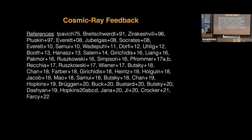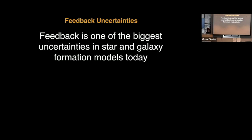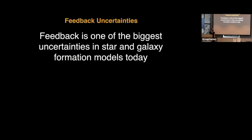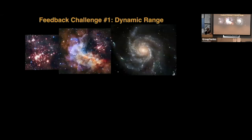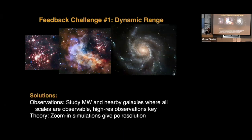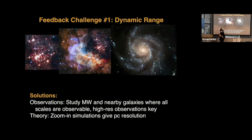Feedback is also one of the biggest uncertainties in star and galaxy formation models today, stemming from four different challenges. Feedback challenge number one is the dynamic range — you're dealing with processes at the scales of individual stars and star clusters, maybe a parsec across, influencing the life cycle of giant molecular clouds at ~100 parsecs, which then shape whole galaxies on tens of kiloparsec scales.